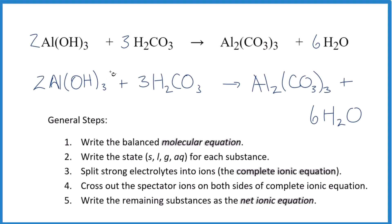Let's take a look at the net ionic equation for Al(OH)3 plus H2CO3. This is aluminum hydroxide and this is carbonic acid. When we look at net ionic equations in general, the first thing we do is balance the molecular equation. I've already done that — if you need help with the coefficients, there is a link at the end of the video.